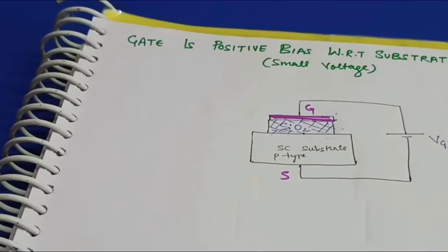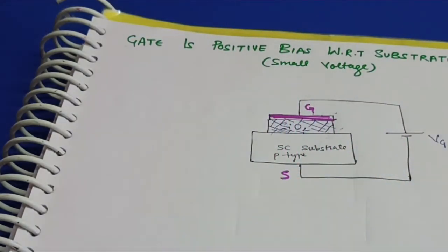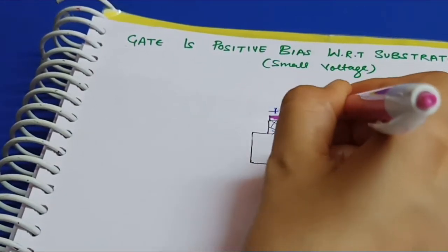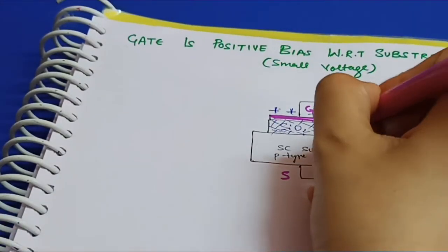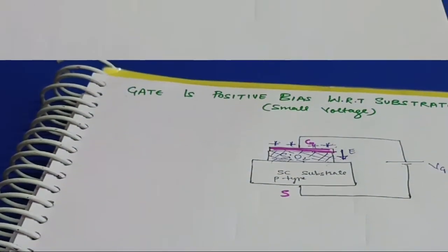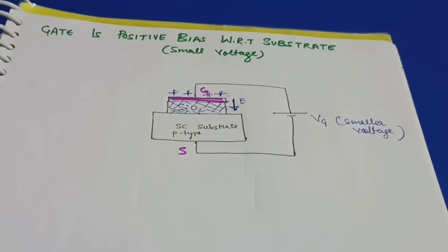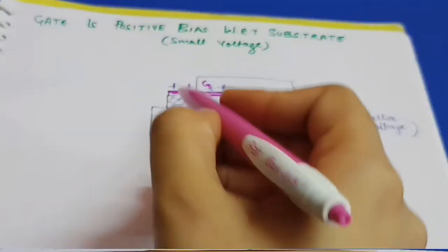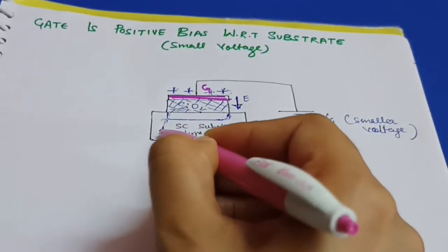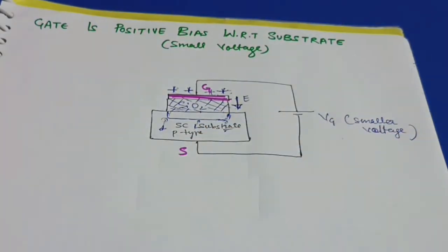Now let's discuss the second case, where the gate is positively biased with respect to the substrate but with a smaller voltage. The positive terminal of the battery is connected to the gate and the negative terminal to the substrate. Positive charges are created at the gate plate, and the electric field is induced in the downward direction. When the electric field penetrates the semiconductor substrate, a force is exerted on the majority carriers — the holes — which move away from the interface region.